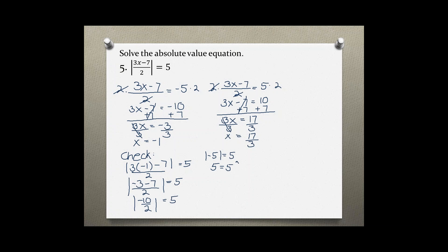Our first solution is a true statement, so that's correct. Now let's check our second solution by plugging it into the original equation, so we get 3 times 17 over 3 minus 7 divided by 2 is equal to 5.